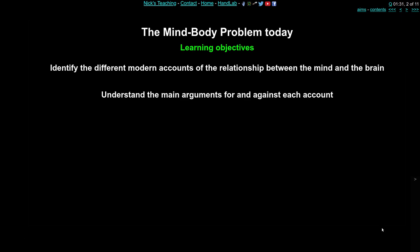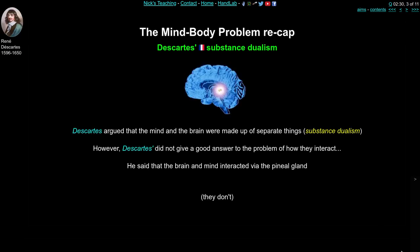The learning objectives for this session are to identify the different modern accounts of the relationship between the mind and the brain — that is, modern approaches to the mind-body problem — and second, to understand the main arguments for and against each account. You could read a week's worth of books and papers on each topic and still only scratch the surface. This is really about understanding what are the main arguments relevant to psychology and the mind-brain problem in modern neuroscience. First, a recap.